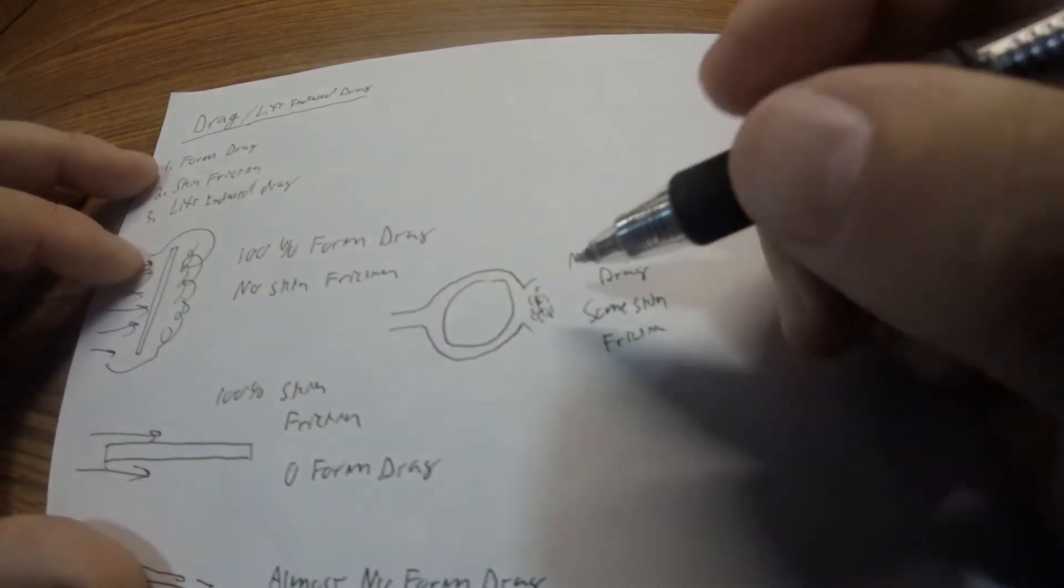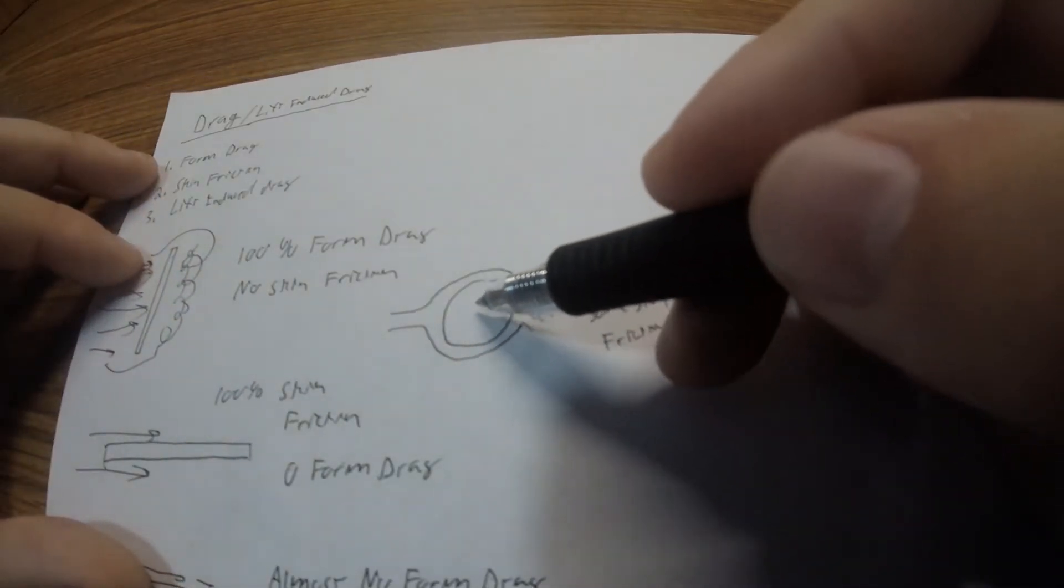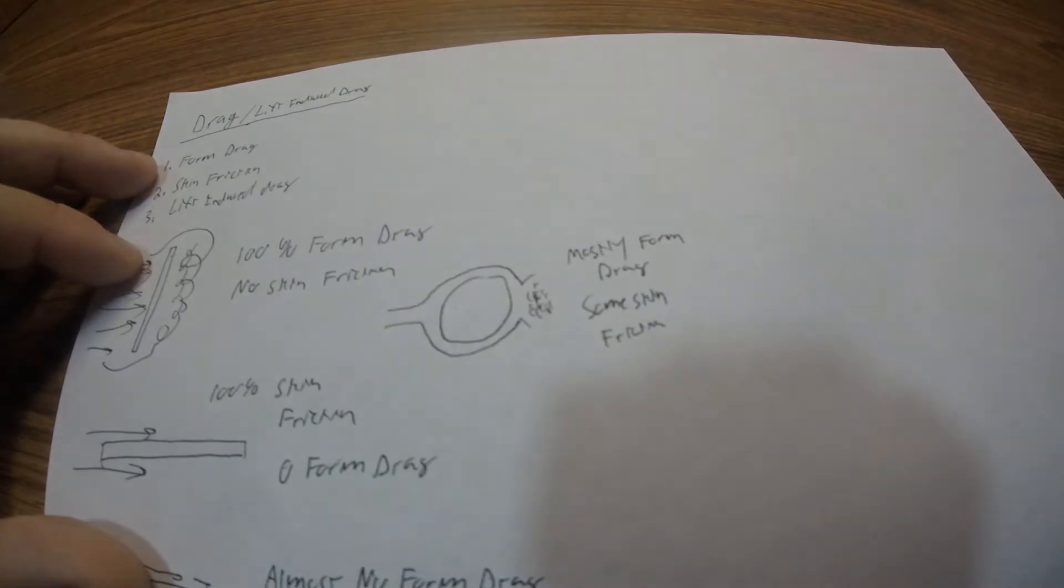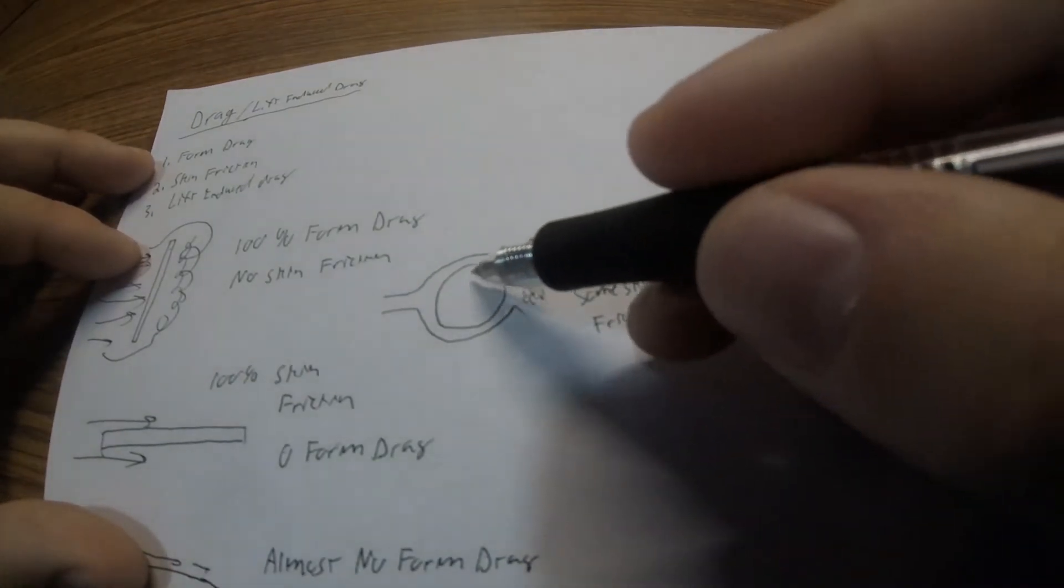And maybe we'll do a video on like dimples on a golf ball. But that's to reduce the skin friction drag and the form drag. It does both of those things.